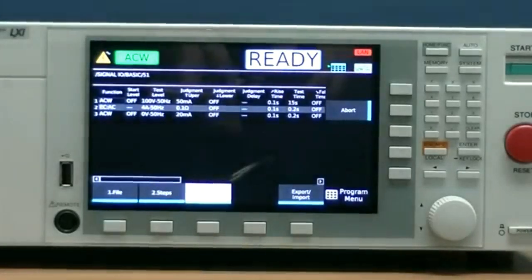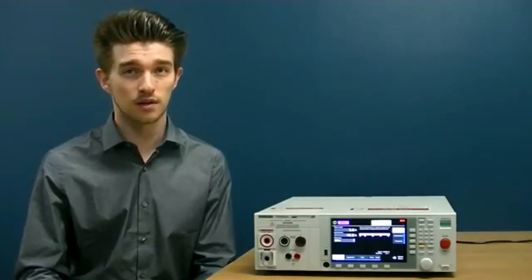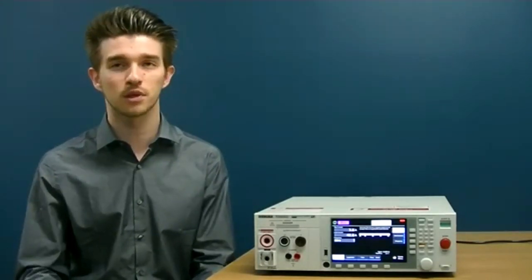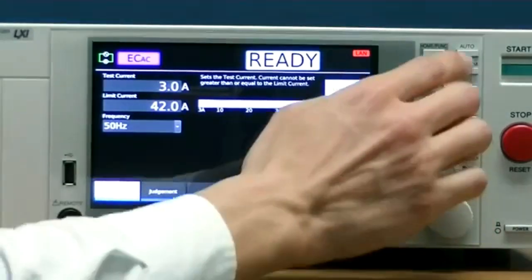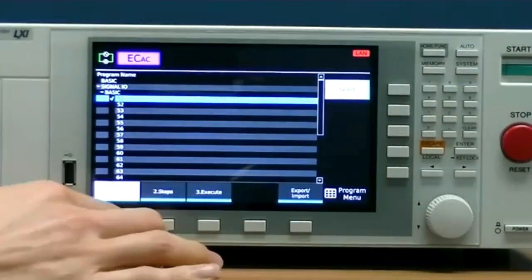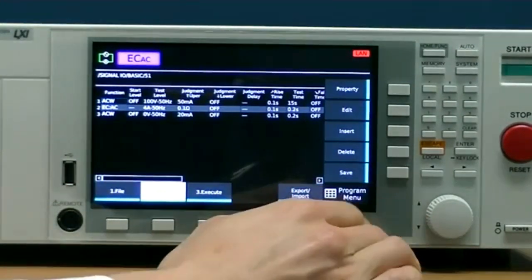To keep things simple, we'll create one program consisting of 3 steps. Say for example, you want to test the dielectric strength and insulation resistance of your product to protect the consumer from electric shock. All you would need to do is press auto, input your test settings from the front panel, press save, and your test is complete.